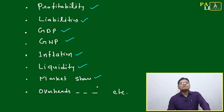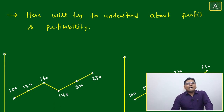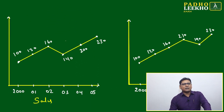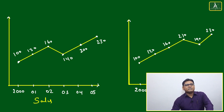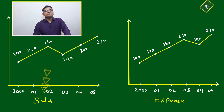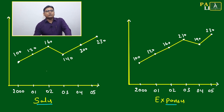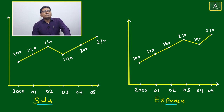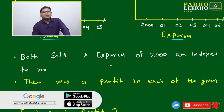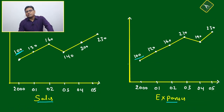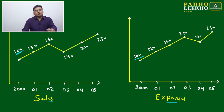Here we'll try to understand two terminologies — profit and profitability — based on which I've picked one set of data. This is represented in the form of a line graph. The first graph is sales and the second graph is expenses, both given over a span of five years from 2000 to 2005. Both data sets are indexed at 100 at the start — meaning in year 2000, we have taken a starting index of 100 for both.